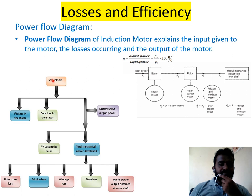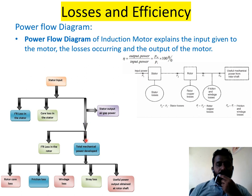From stator input, we will get stator output. There are I²R losses and core losses in the stator. The stator output is the air gap power, which is given to the rotor. In the rotor there are I²R losses, and the total mechanical power developed has rotor core loss, friction losses, windage losses, and stray losses. After this, you will get the useful power output obtained at the rotor shaft.